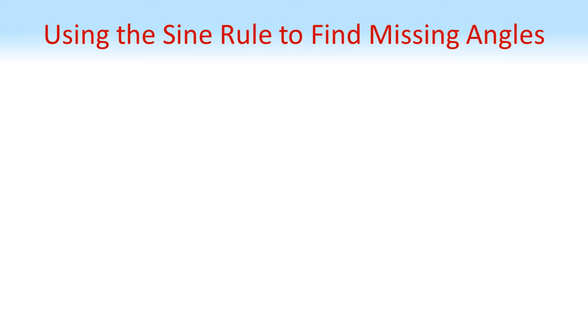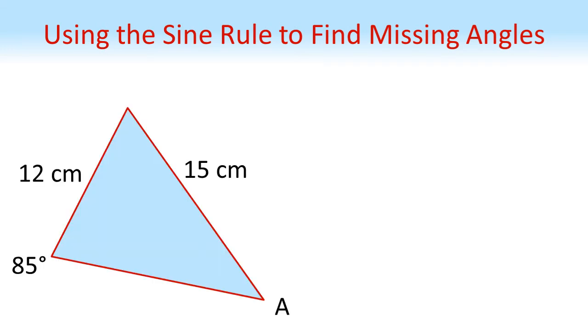So far we've been using the sine rule to find missing sides, but we can also use it to find missing angles, such as in this example here. So again, note that on the triangle we've got the pairings of opposite angle and side, so we can use the sine rule.